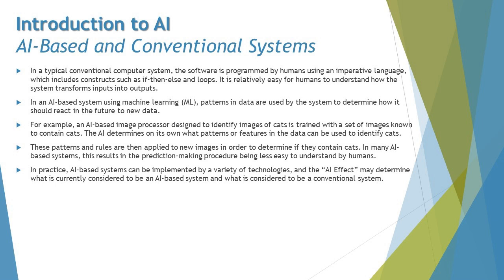On the other hand, when we talk about AI-based systems, it is done using machine learning. Patterns in the data are used by the system to determine how it should react to new data in the future. Instead of writing a program to detect certain things, we use pattern-based data — feeding in different response information to train the machine so it can detect that information later. For example, an AI-based image processor designed to identify images of cats is trained with a set of images known to contain cats.